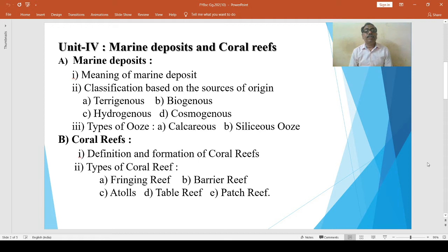In the study of marine deposits, we have to discuss the meaning of marine deposit, classification based on the sources of origin. The sources are terrigenous, biogenous, hydrogenous, and cosmogenous. Then the types of ooze: calcareous ooze and siliceous ooze.